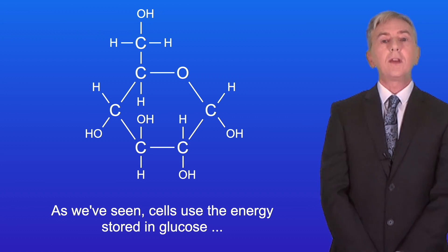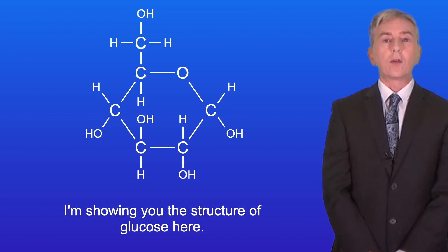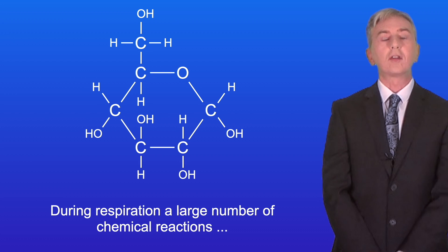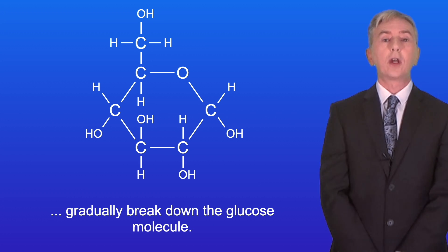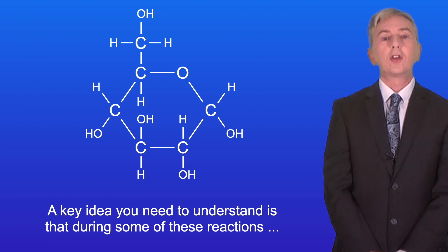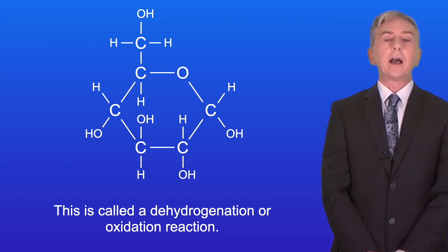So as we've seen, cells use the energy stored in glucose to produce ATP in respiration. I'm showing you the structure of glucose here. During respiration, a large number of chemical reactions gradually break down the glucose molecule. Now a key idea you need to understand is that during some of these reactions, a hydrogen ion is released. This is called a dehydrogenation or oxidation reaction.